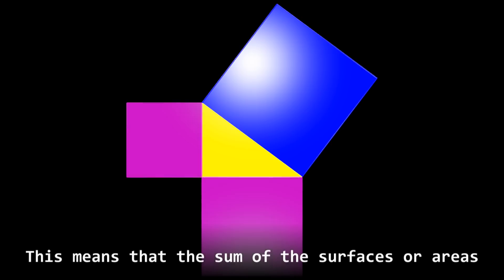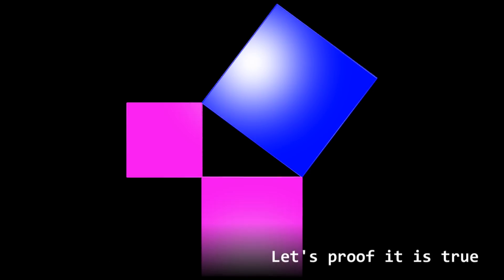This means that the sum of the surfaces or areas of the purple squares equals the area or surface of the blue square. Let's prove it's true.